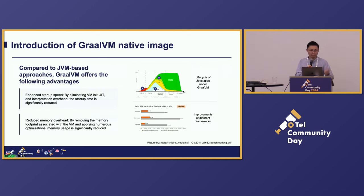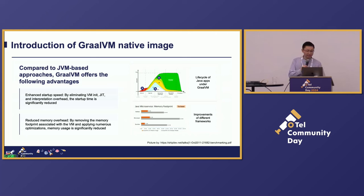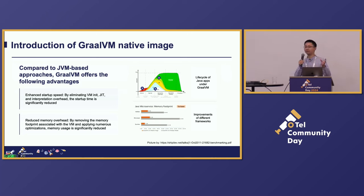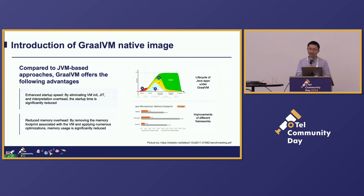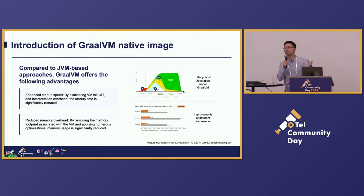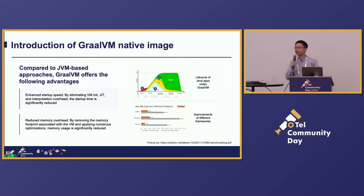About five years ago, GraalVM had its first release. Compared to JVM-based approaches, GraalVM native image offers several advantages. First, it eliminates VM initialization, JIT compilation, and interpretation, so it can dramatically reduce the startup time of Java applications. Secondly, it removes the memory footprint associated with VM initialization and class initialization, so memory consumption can be significantly lower. From the figure on the right, we can see five times lower memory consumption than VM-based approaches.